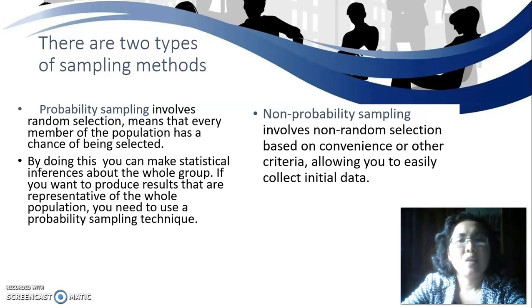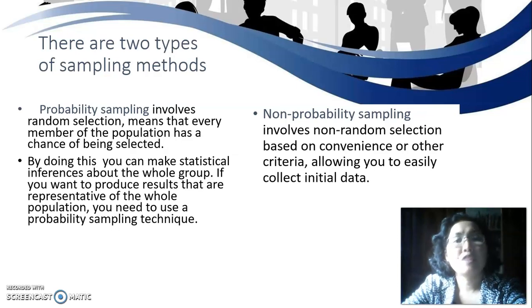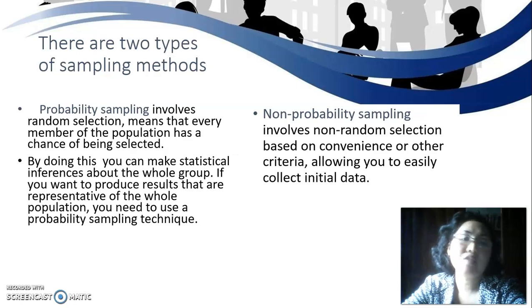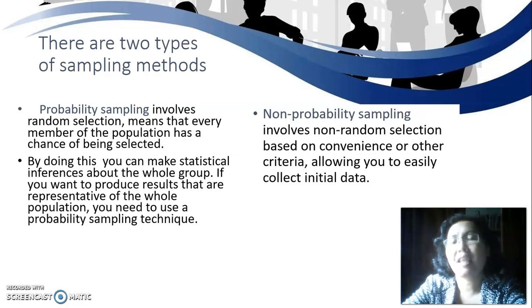The second type is non-probability sampling. This involves non-random selection based on convenience or other criteria, allowing you to easily collect initial data.